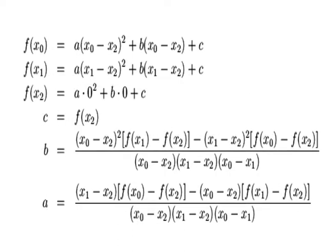We substitute the values of x0, x1, and x2 in the quadratic equation and get three equations in A, B, and C. The form of the polynomial we are using gives us immediately the value of C — no calculation needed, it is directly obtained. The other two equations can be used to evaluate coefficients A and B using Gauss elimination method. The expressions for A and B are given on your screen.